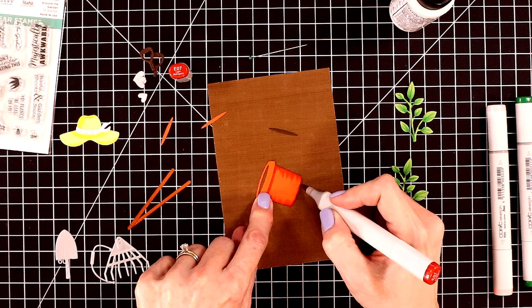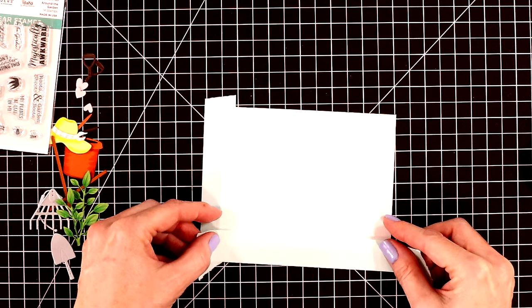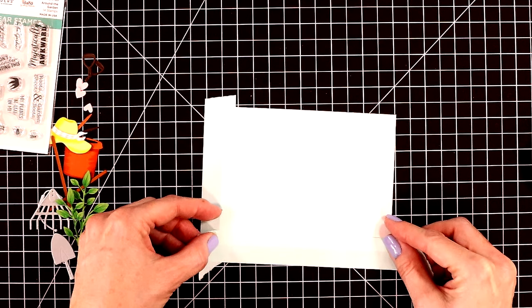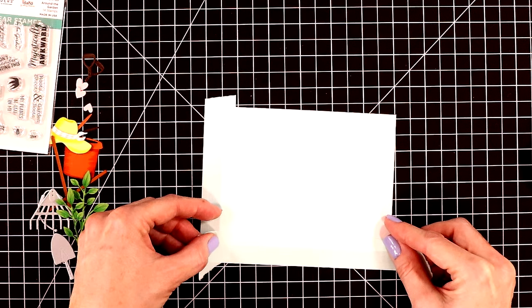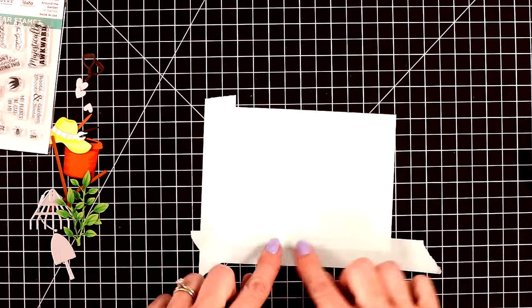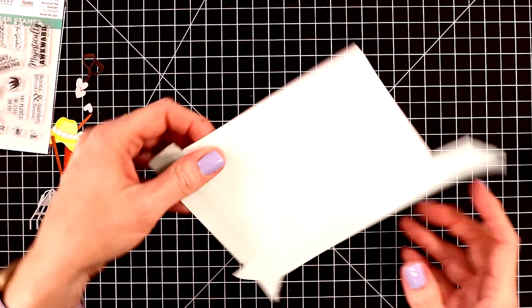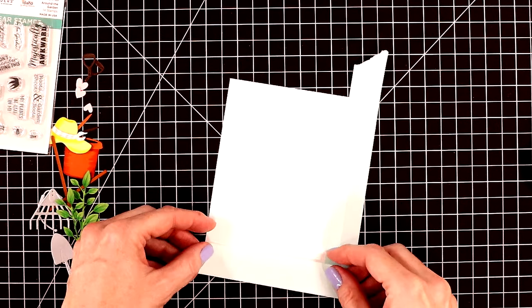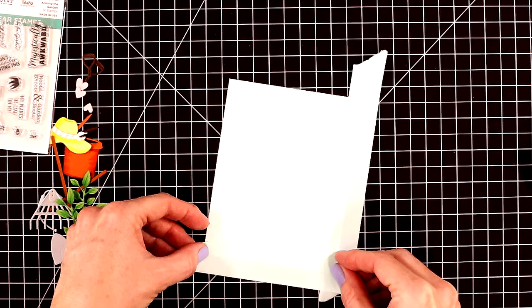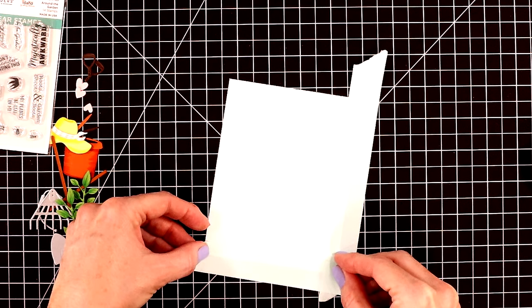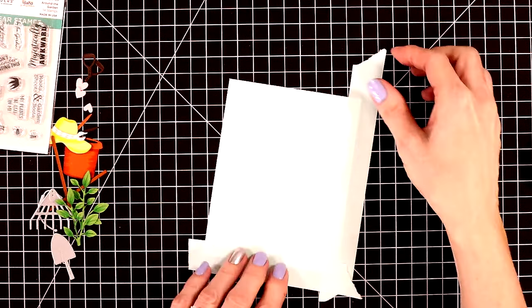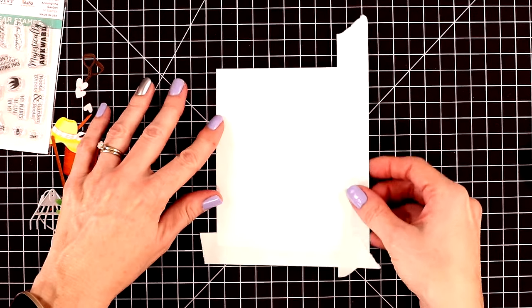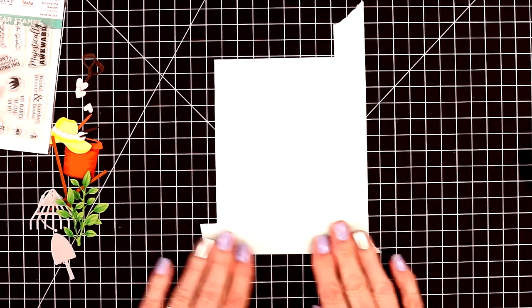I'm going to set these pieces aside for a few minutes while I work on my main panel or my background panel. I'm using some masking tape to mask off the right side of my card as well as the bottom. I'm just eyeballing this. You could measure it of course if you wanted to but I need to readjust the bottom tape. And then I'm going to pull in some distress oxide inks to add a little bit of color to this background.